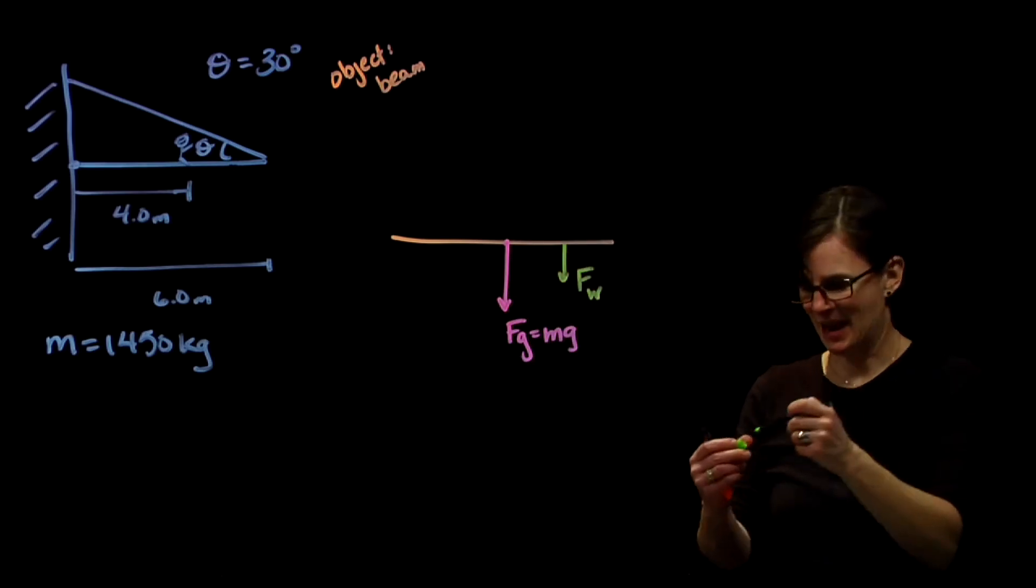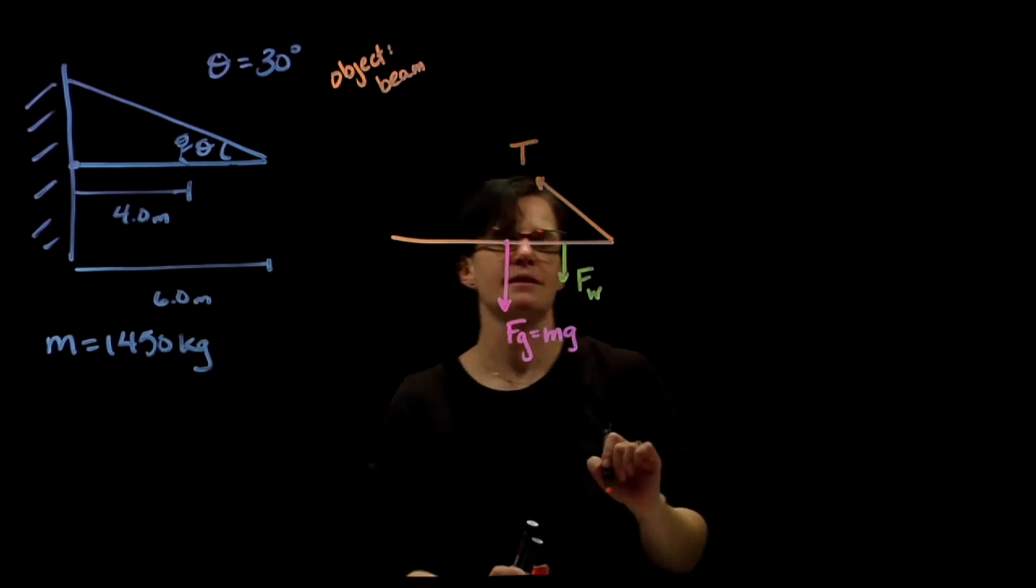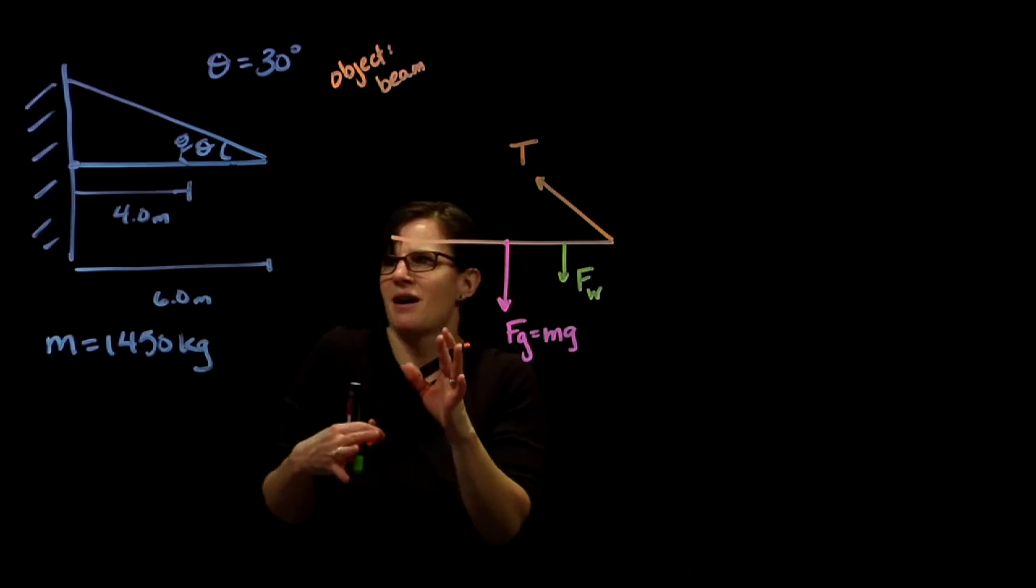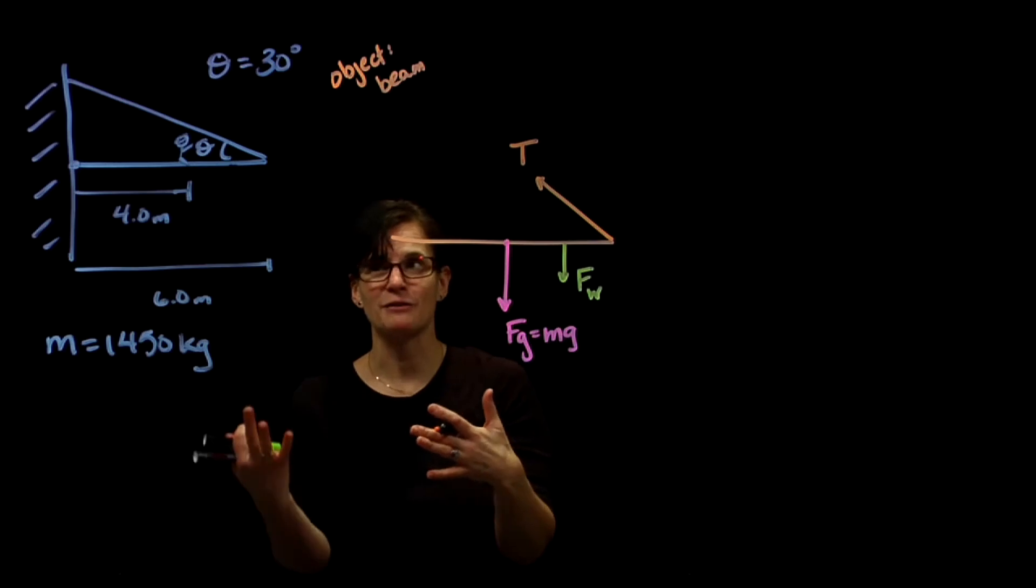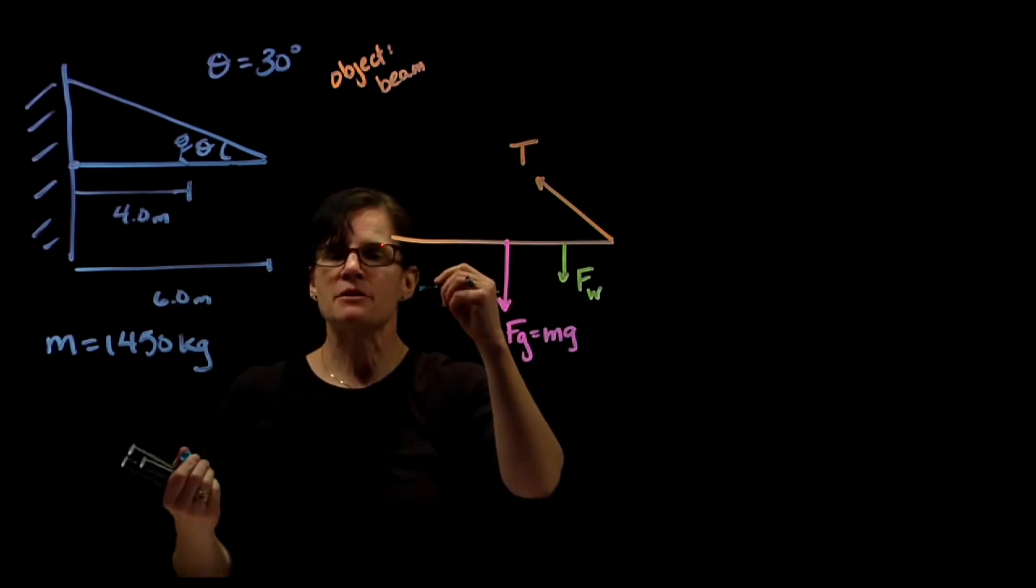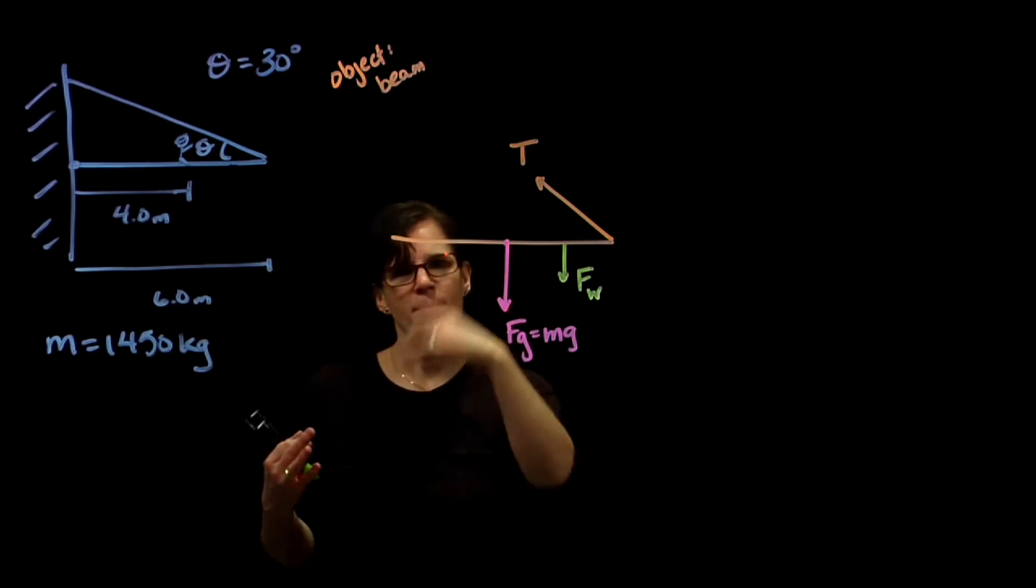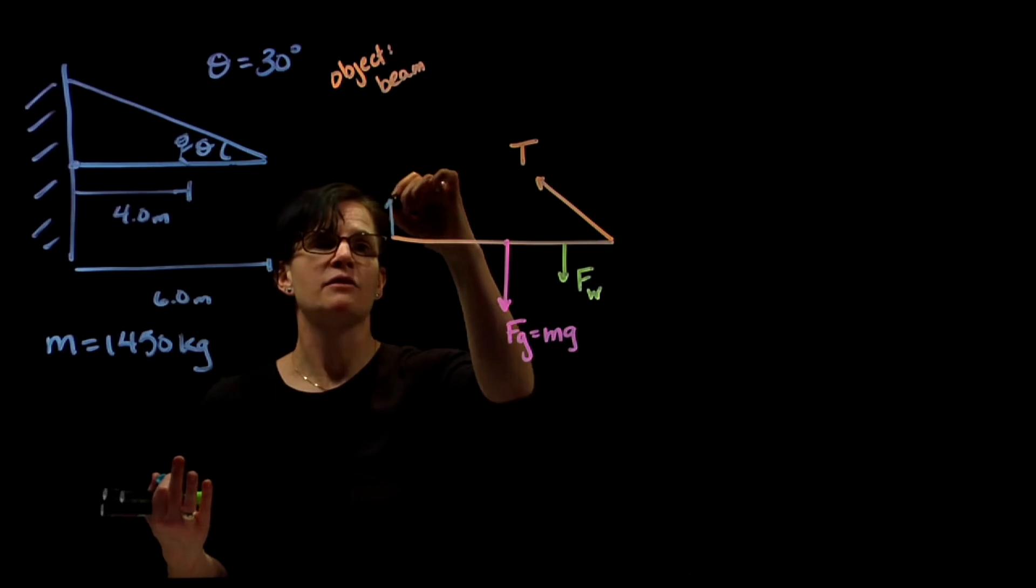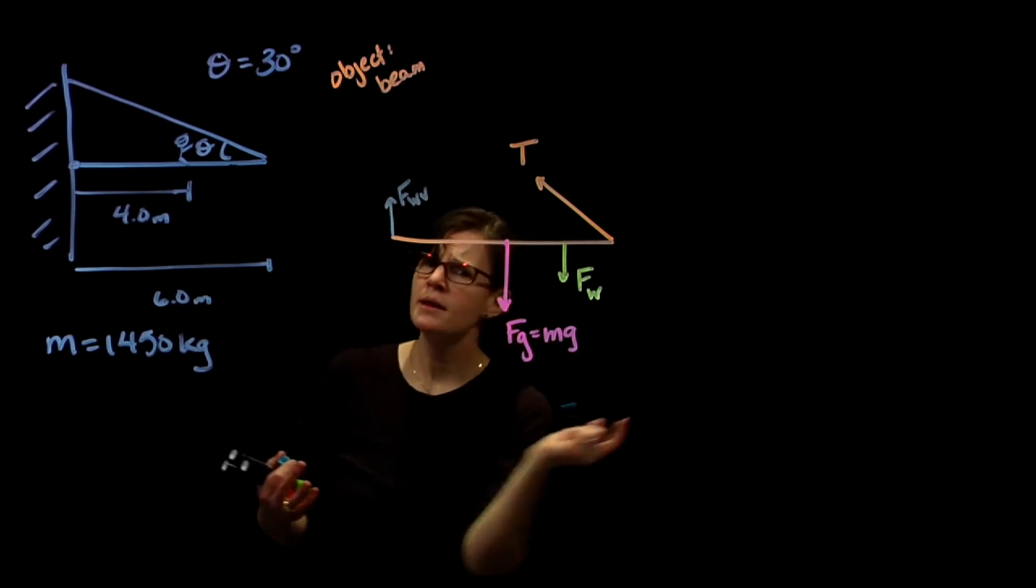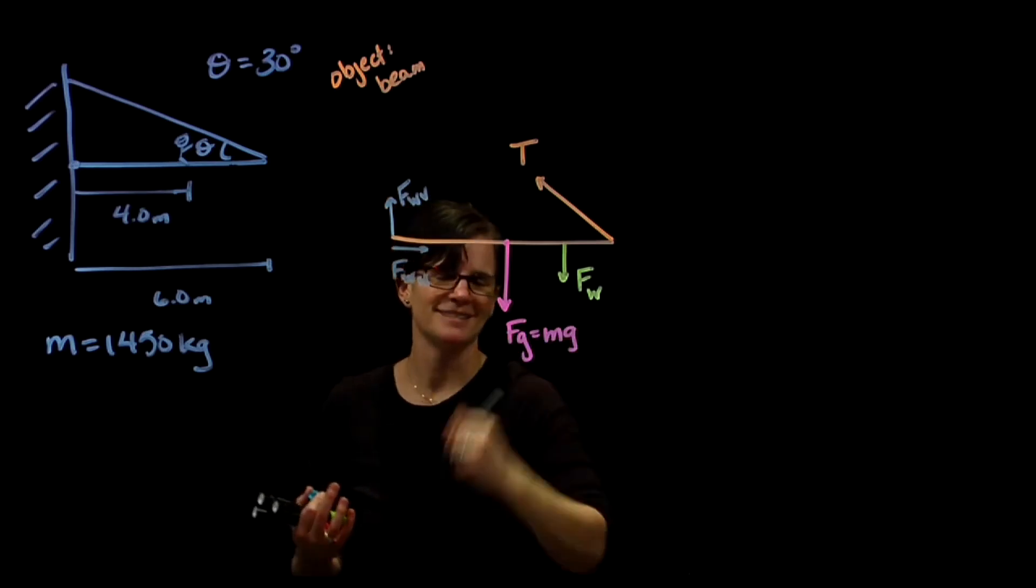We have the tension in the cable pulling the beam back and up. And then the beam is interacting with the wall. We don't exactly know what direction of the force, but we think about forces being independent and having vertical and horizontal components. There's a force of the wall vertically and there's a force of the wall horizontally.